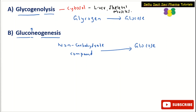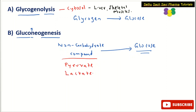Normally glucose could be synthesized from glycogen, which is a carbohydrate compound. But whenever glucose is synthesized from a non-carbohydrate compound, that process is called gluconeogenesis. One of the main non-carbohydrate compounds is pyruvate — pyruvate will be converted to glucose. Lactate is also a non-carbohydrate compound from which glucose will be synthesized, and that conversion is also gluconeogenesis.